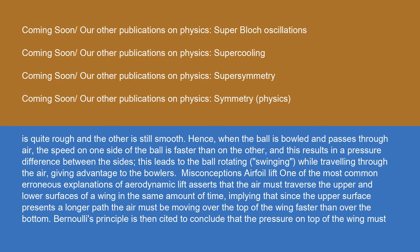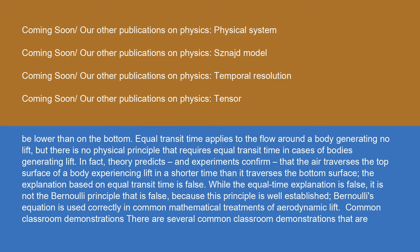One of the most common erroneous explanations of aerodynamic lift asserts that the air must traverse the upper and lower surfaces of a wing in the same amount of time, implying that since the upper surface presents a longer path, the air must be moving over the top faster. Bernoulli's principle is then cited to conclude that the pressure on top must be lower than on the bottom. However, there is no physical principle that requires equal transit time in cases of bodies generating lift. In fact, theory predicts and experiments confirm that the air traverses the top surface in a shorter time than it traverses the bottom surface. While the equal time explanation is false, it is not Bernoulli's principle that is false, since this principle is well established and is used correctly in common mathematical treatments of aerodynamic lift.